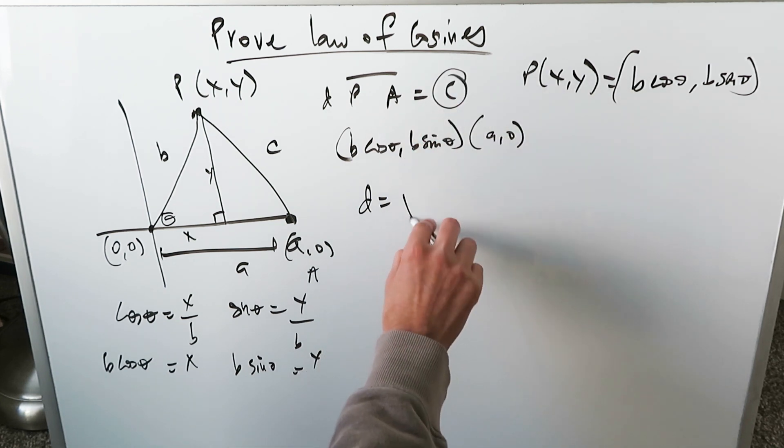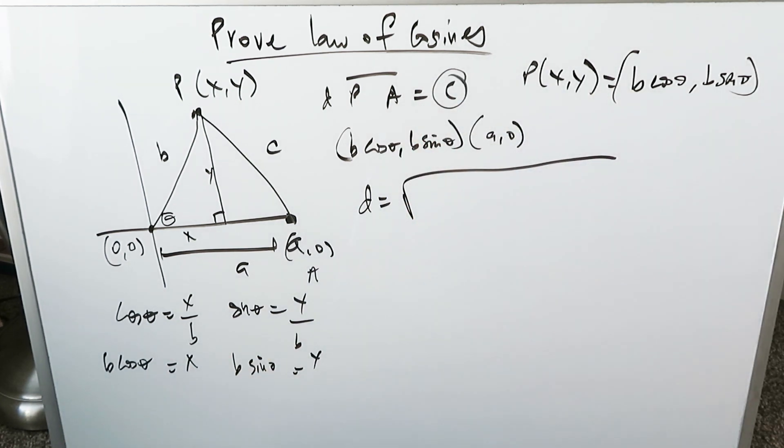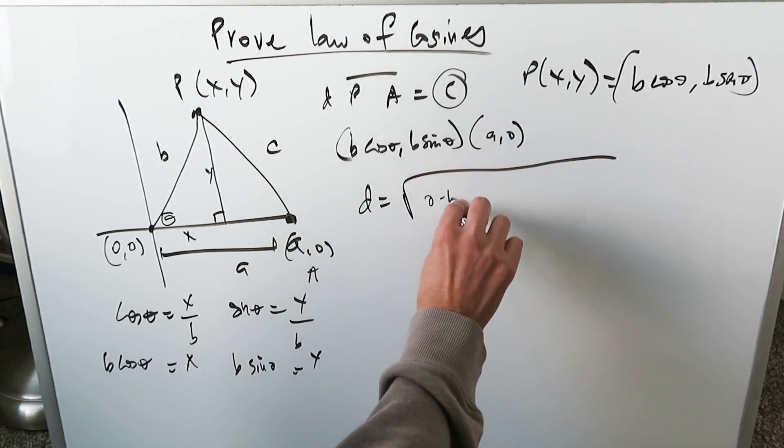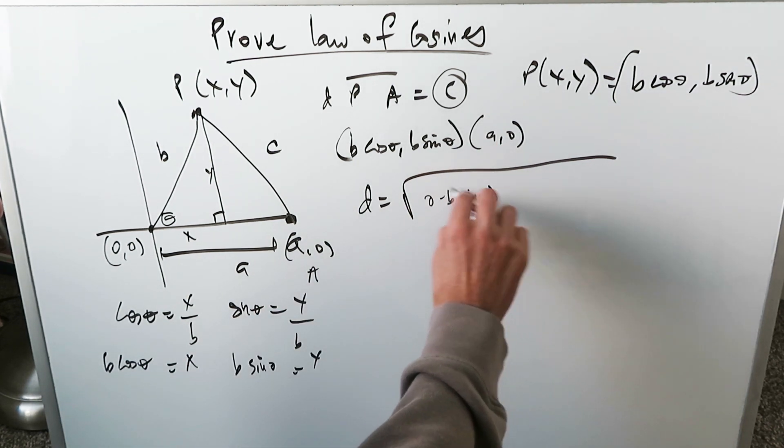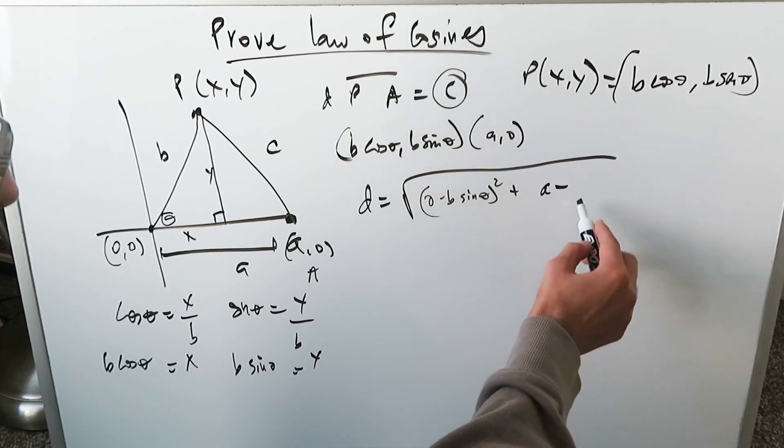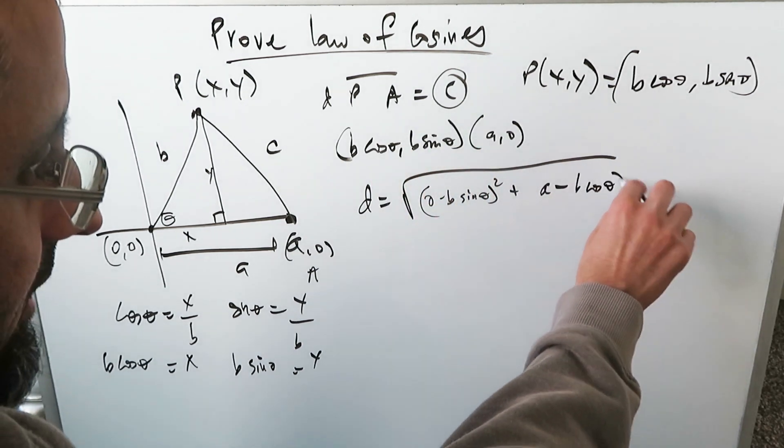0 minus b sine theta whole square plus x2 minus x1 whole square. A minus b cosine theta whole square.